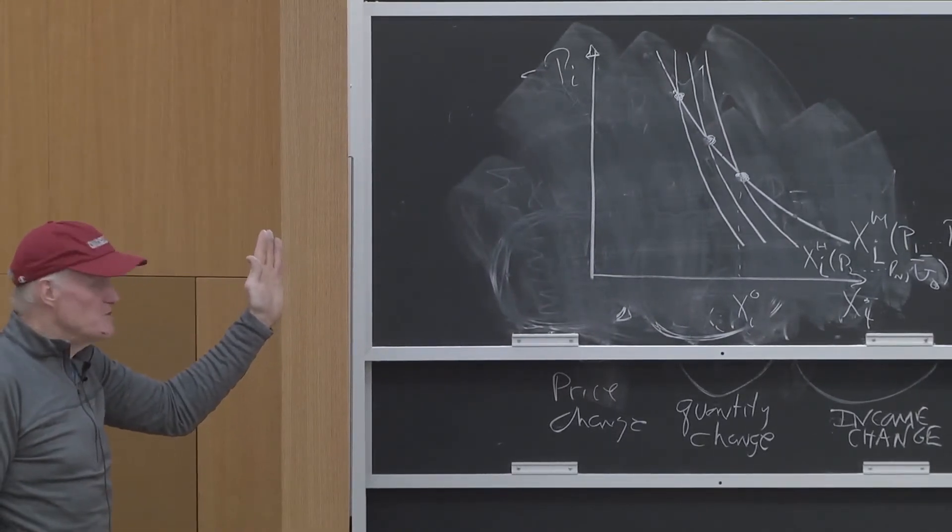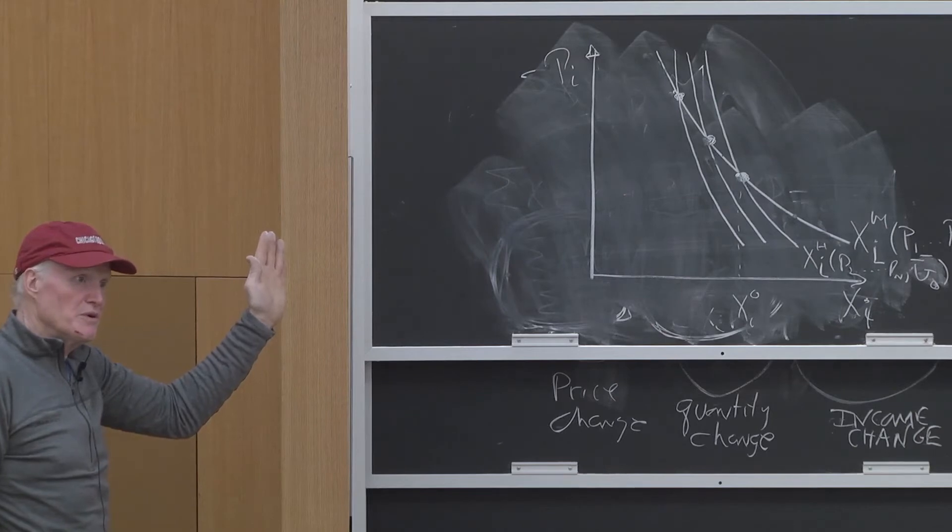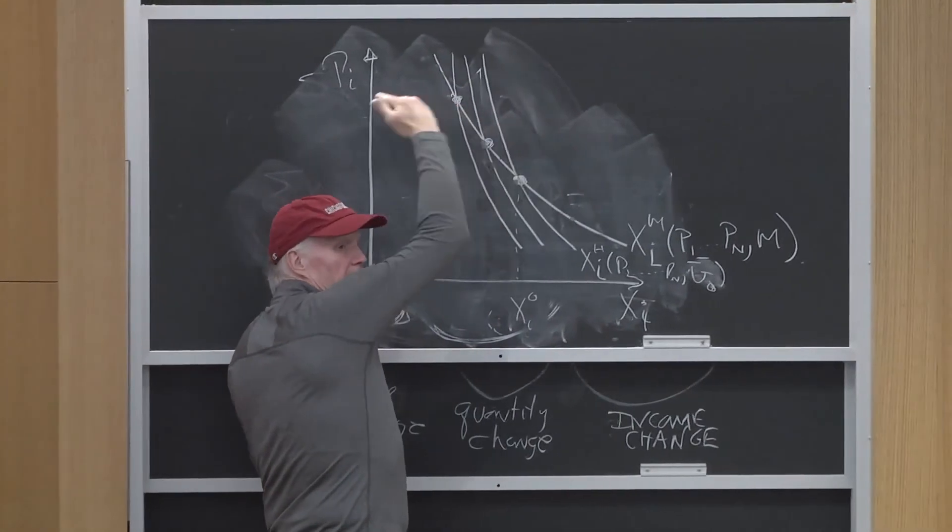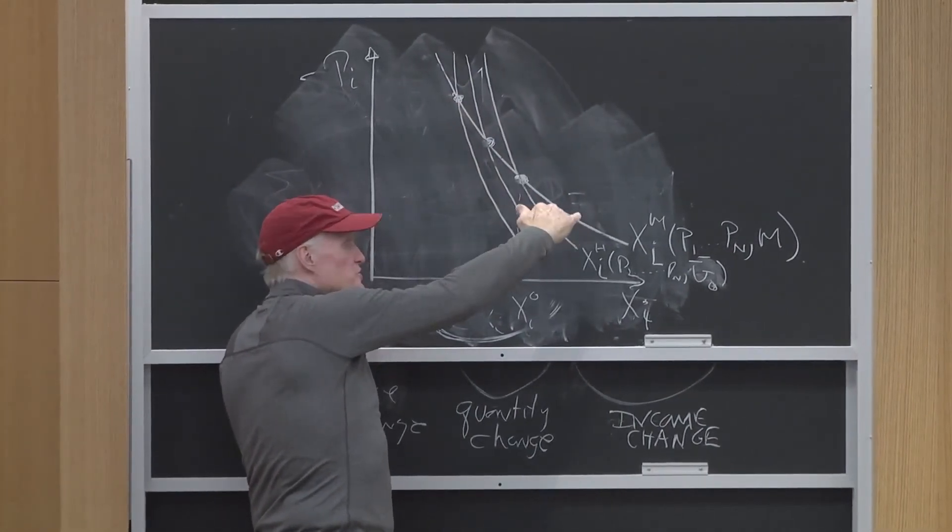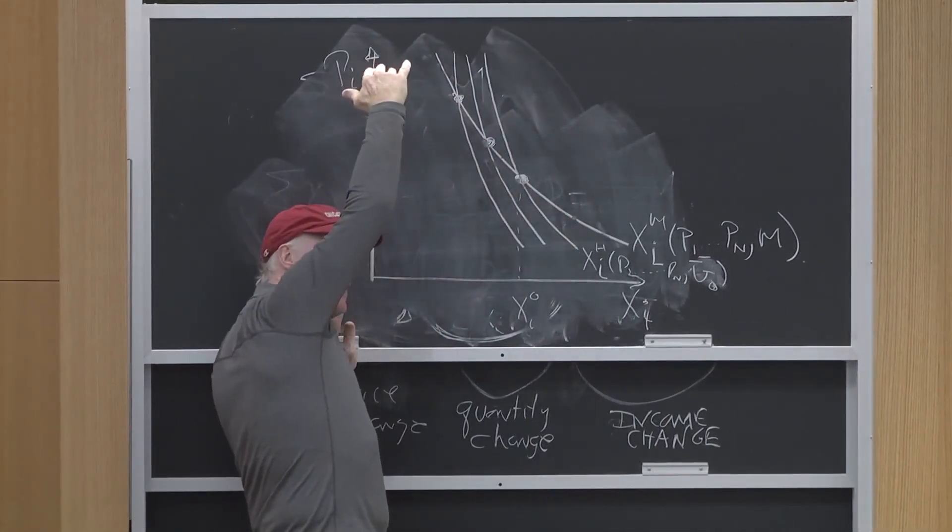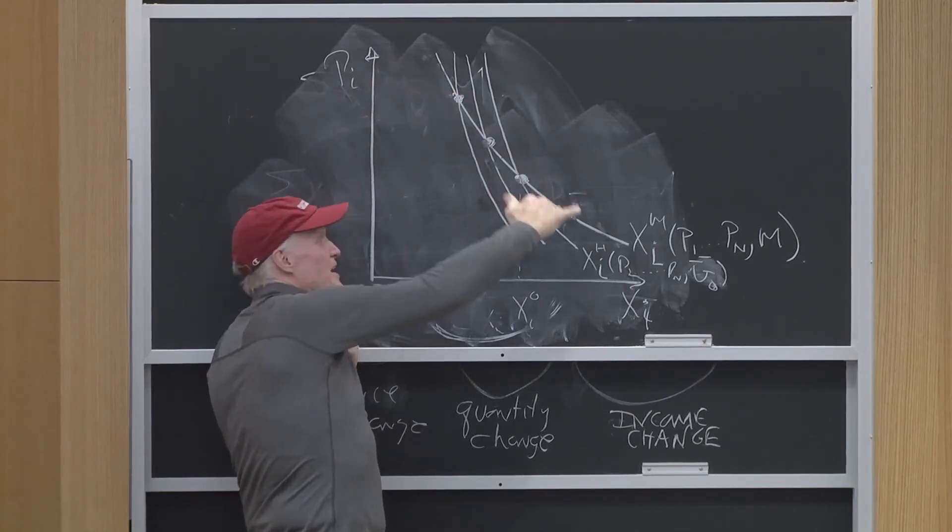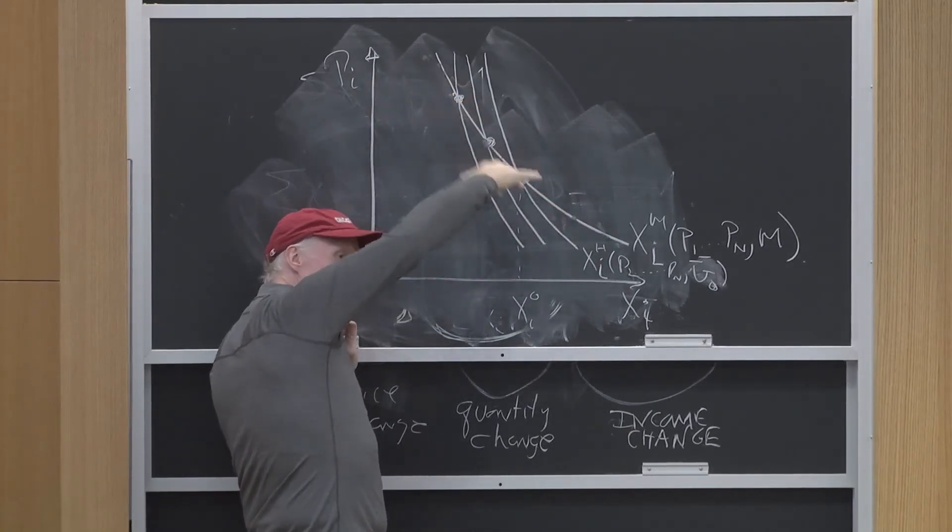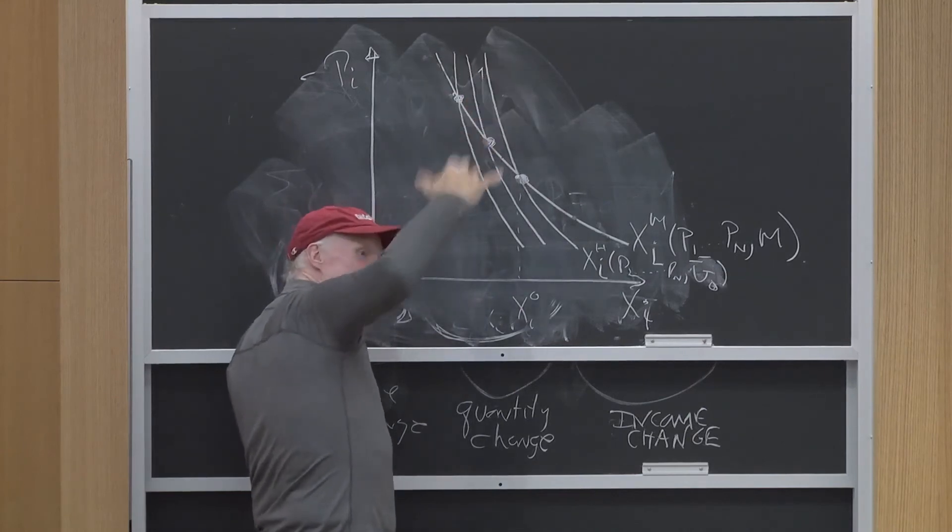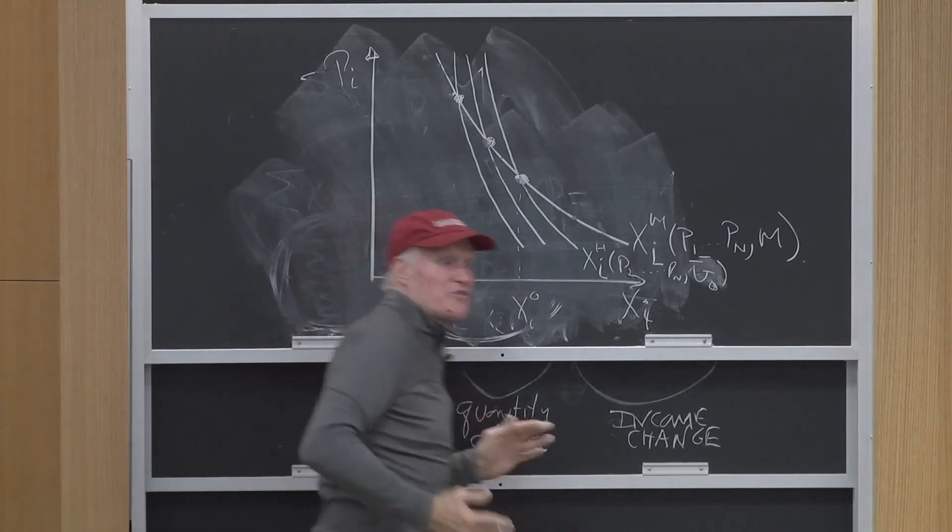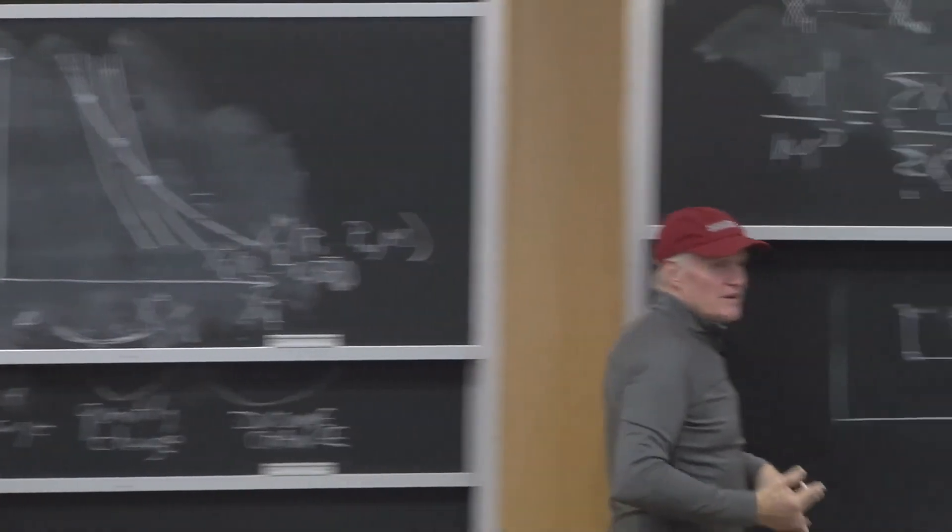If this good was inferior, what would be true? The Hicksian demand curves would be flatter. They would still be utility ordered the same way. But because the good's inferior, as I go up I'm worse off, and the demand curves are shifting out because I'm worse off and it's inferior.